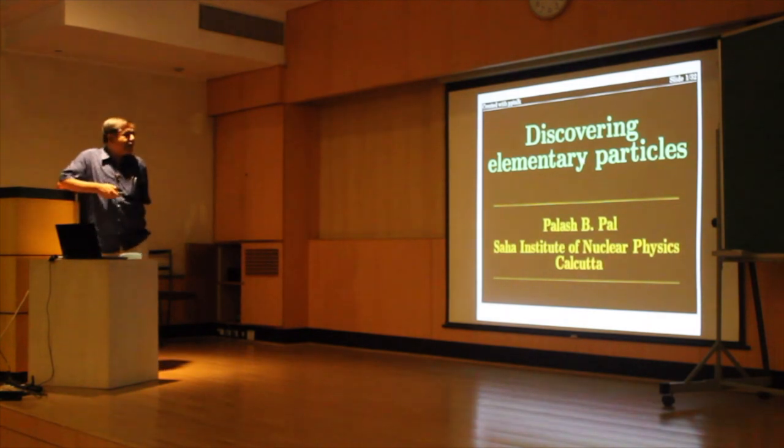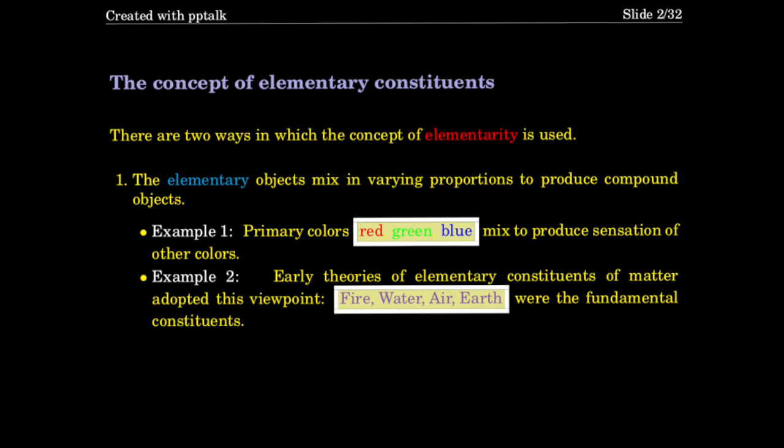So let's start with that word, 'elementary.' What does elementary mean? There are actually two ways the concept of elementarity is used in the context of matter. Number one: the elementary objects mix in varying proportions to produce compound objects. For example, the primary colors red, green, and blue mix to produce a sensation of other colors. Or early theories thought fire, water, air, and earth were the fundamental constituents — everything being some mixture of these four.